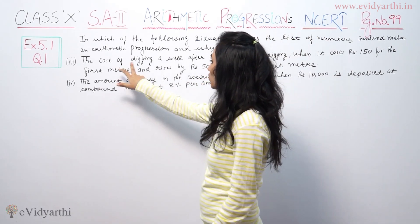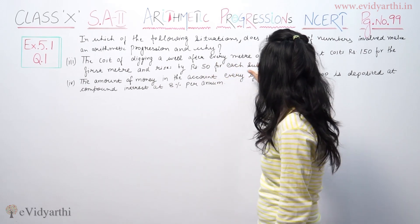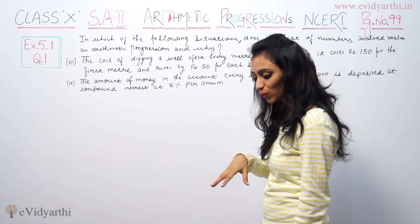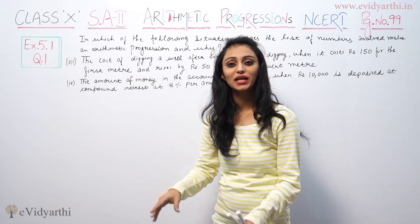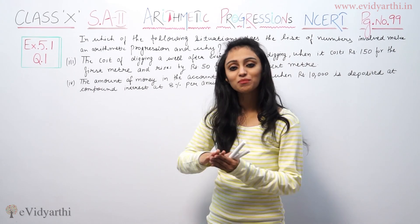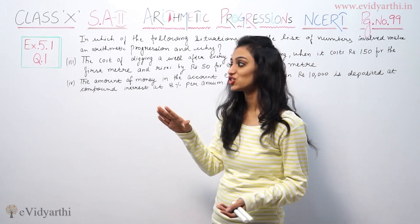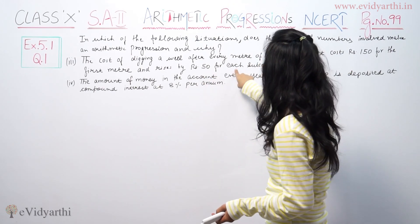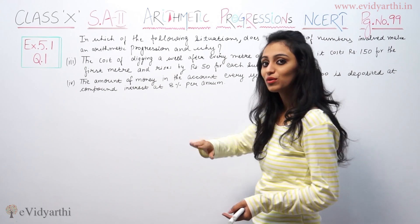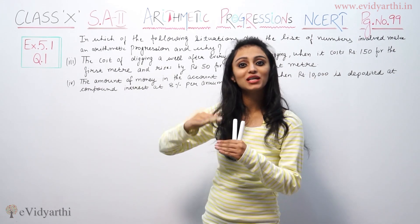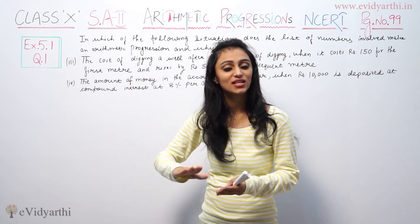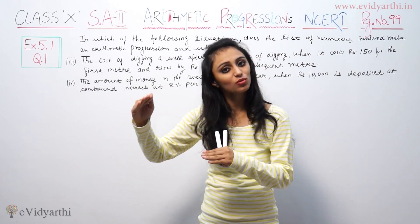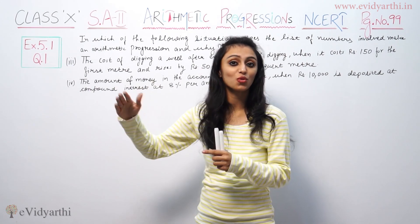The first situation is the cost of digging a well. For the first meter it costs rupees 150, and it rises by rupees 50 for each subsequent meter. So if one meter is 150 rupees, the second meter would be 200 rupees.